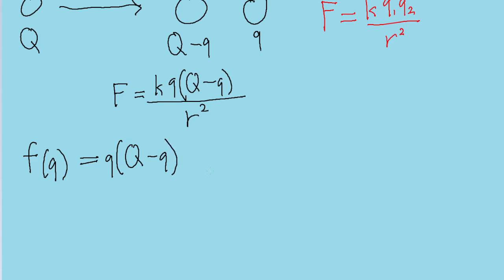Now let's take the derivative of this function. First, let's simplify it a bit. Let's distribute over the parentheses here, so this more simply would be small q multiplied by big Q minus small q multiplied by small q, so that is small q squared.